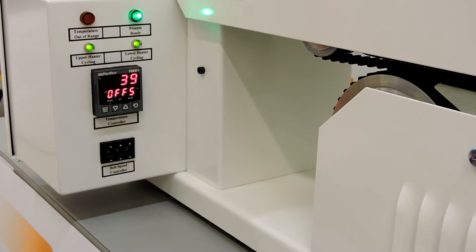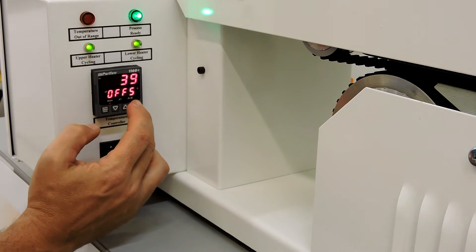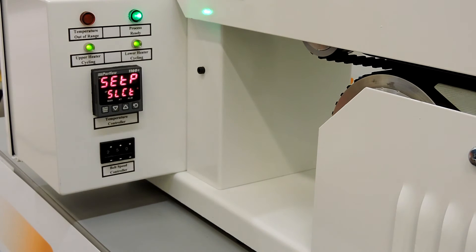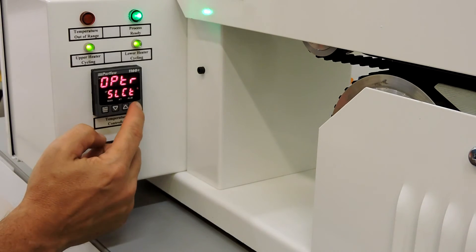Once the offset is adjusted, press and hold the scroll key while pressing the up arrow key to display the setup mode. Press the down arrow key once to display the operator mode. Press the scroll key once to exit the program.